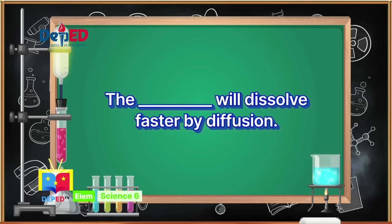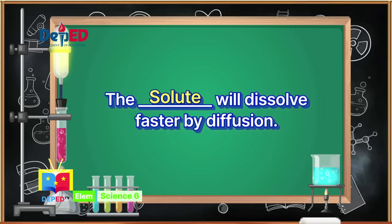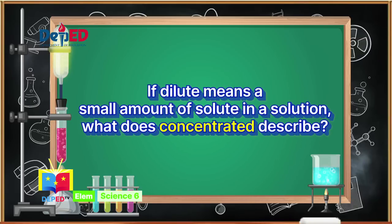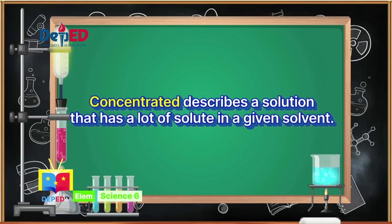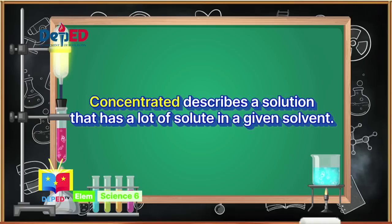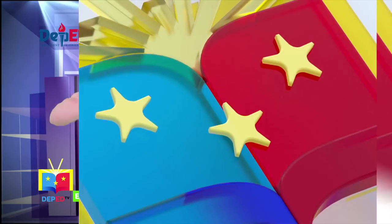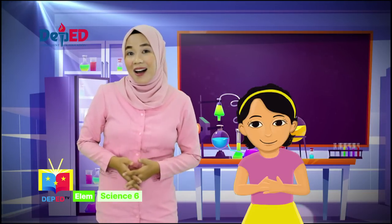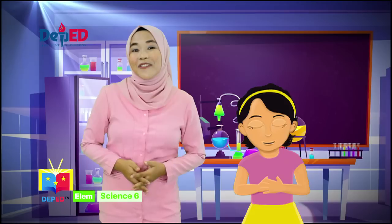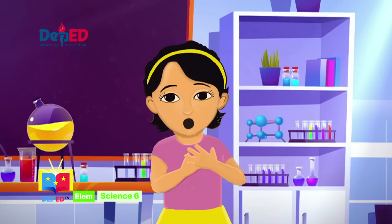Great! Manner of stirring and size of solute. The blank will dissolve faster by diffusion. Correct — Solute. If dilute means a small amount of solute in a solution, what does concentrated describe? Very good! Concentrated describes a solution that has a lot of solute in a given solvent. Sissy is so happy because she's done with her activity with your help. Thank you so much, science-minded learners.